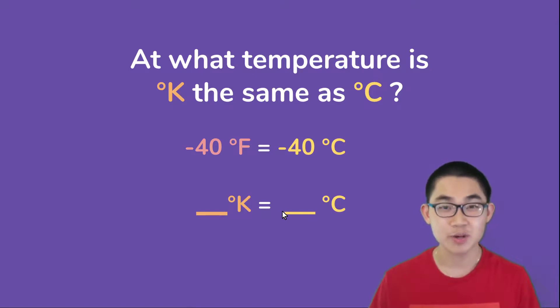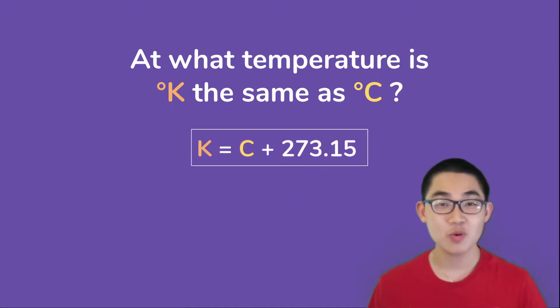So we're going to use this equation again. And because the Kelvin is the same as the Celsius, we can set both of them to X so they can have the same value. And then if we solve for X, we will basically get the number where the Kelvin is equal to Celsius.